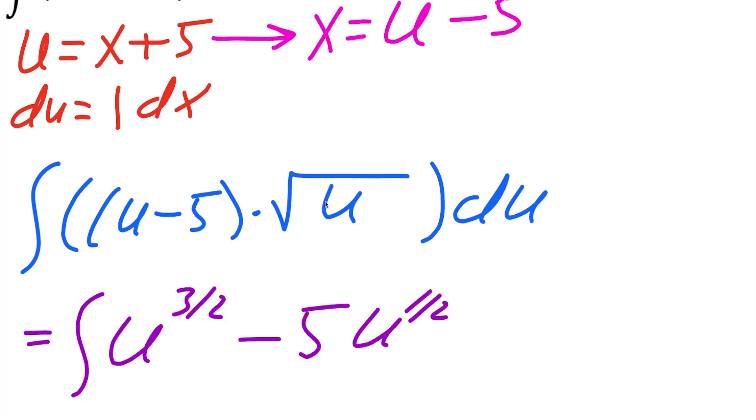So this u, the square root of u is the same thing as u raised to 1 half. So we have u times u raised to 1 half, so it's like 1 plus 1 half gives us 3 divided by 2, and that's how we can come up with this.